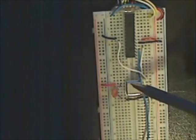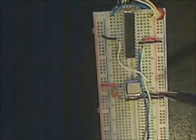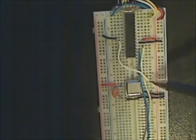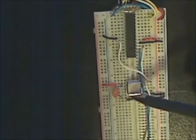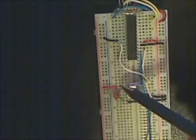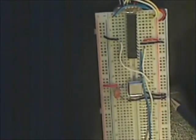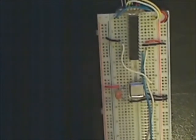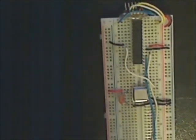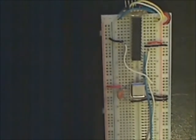Again, power to this guy, ground to this guy. The signal comes out here. This pin is not connected, we don't need to use it. There's a capacitor between power and ground, which is used for reasons of noise. We don't want any more noise than we need.